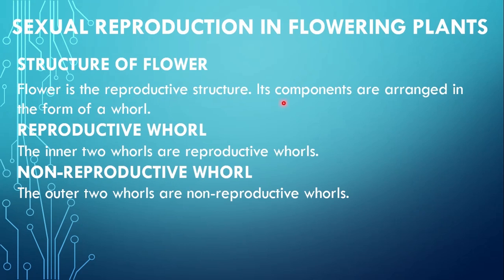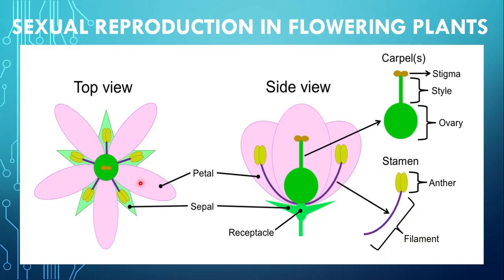Flower is the reproductive structure. Its components are arranged in the form of a whorl. Plant body mein flower ko reproductive structure bola jata hai jahan is flower ke components whorls ki shakal mein arrange hote hain. Kisi bhi flower mein two types ke whorls present hote hain. The inner two whorls are reproductive whorls, while the outer two whorls are non-reproductive whorls.